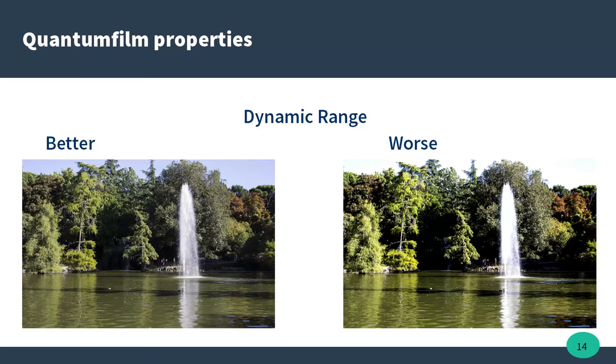Then, the dynamic range refers to the ratio of the device output at its saturation to noise level. A high dynamic range preserves detail in both shadow and highlight simultaneously. So low noise and a large charge capacity are essential to delivering great dynamic range.